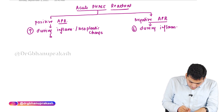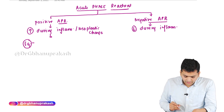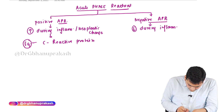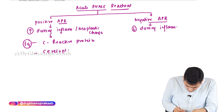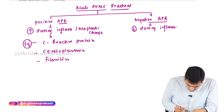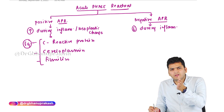The examples of positive acute phase reactants — molecules that are going to increase during the acute phase of inflammation — are C-reactive protein and ceruloplasmin.